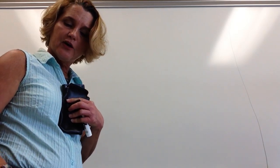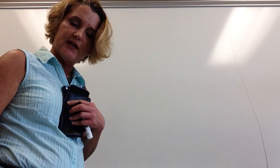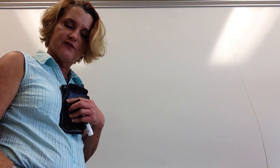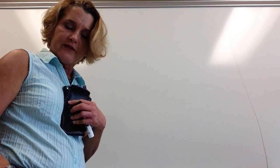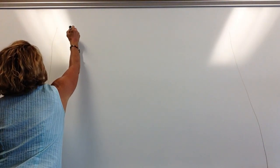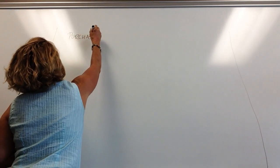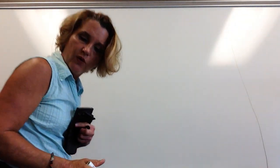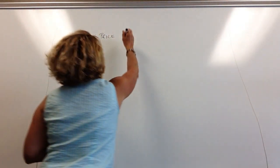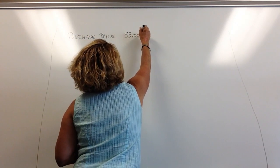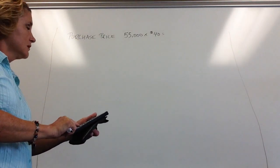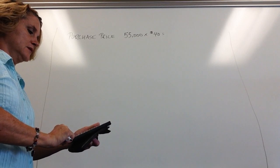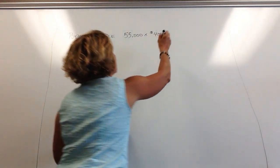The problem states the parent company acquires its subsidiary on January 1st, 2013 by exchanging 55,000 shares of its common stock, which has a market value of $40 per share, for all the outstanding voting shares of the acquiree. Our purchase price is 55,000 shares times $40, which equals $2,200,000.